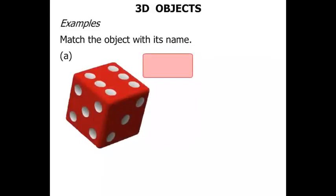The first one we've got there is a die. Notice I didn't say dice, because dice is if you've got two or more. But if you've just got one of them, it's a die.